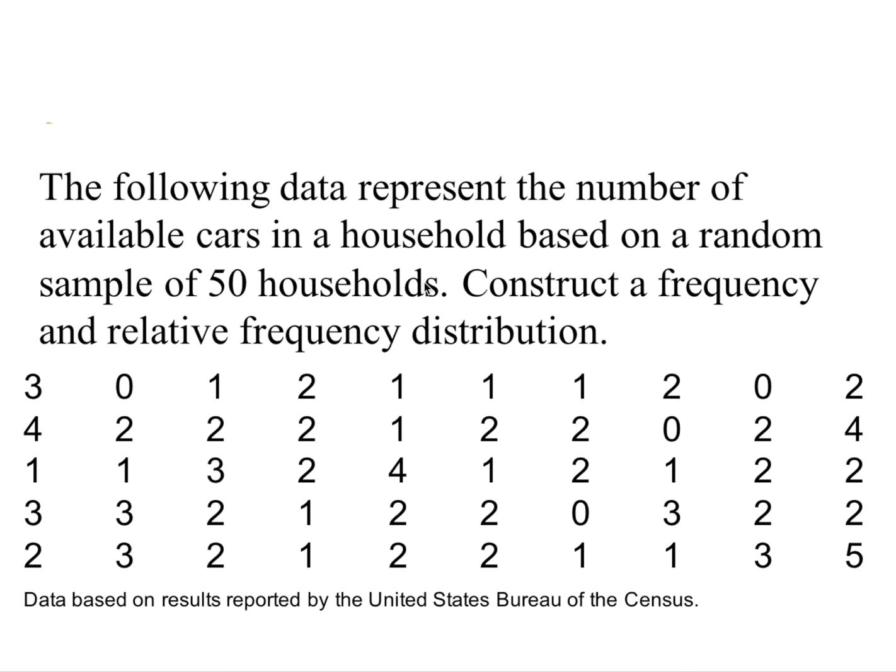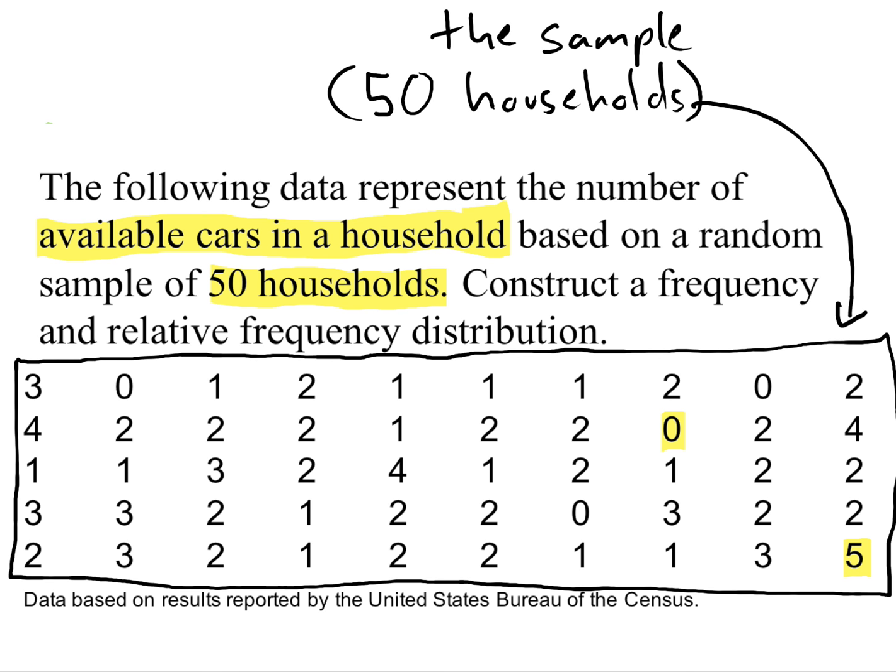Here's a quantitative variable. We have data from 50 households, and the numbers we have are the number of available cars in that household. We have some zeros here that looks like the smallest, goes up to five, that's the biggest. We have 50 numbers because we took a sample of 50 households.